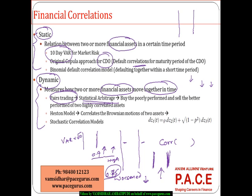Unlike that, there are a few other models, one called the Heston model, which looks at the correlation as a Brownian motion of two assets — the first asset being DZ1(t) and the second one DZ2(t) — where correlation is looked at with respect to the Brownian motion of these two assets, modeled as a standard normal distribution with mean 0 and variance 1. So there could be a few stochastic correlation models as well. All these models are more and more dynamic in nature, not static. We really need to know whether the correlation we are measuring is static or dynamic.